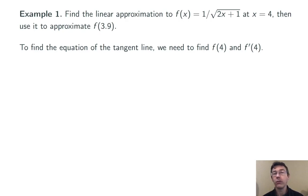So linear approximation just means the equation of the tangent line. In order to do that, we're going to need to find the value of the function at that point, x equals 4, and the value of the derivative. So let's start just by finding f of 4. It's 1 over the square root of 2 times 4 plus 1, or 1 over the square root of 9, or 1 third.